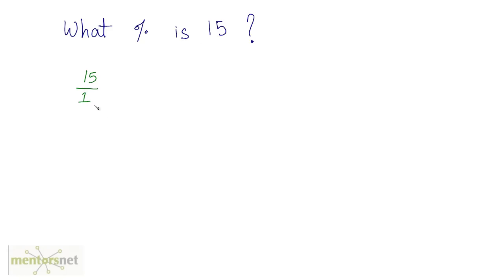So to make the denominator 100, I will have to multiply this whole fraction by 100 by 100. Essentially, the value must not change. So this will be equal to 1500 divided by 100, and that is the percentage.